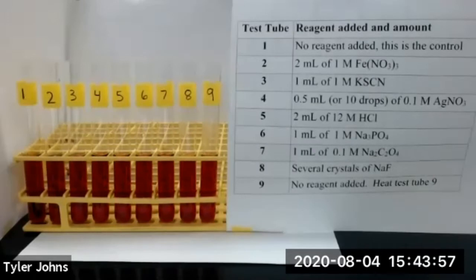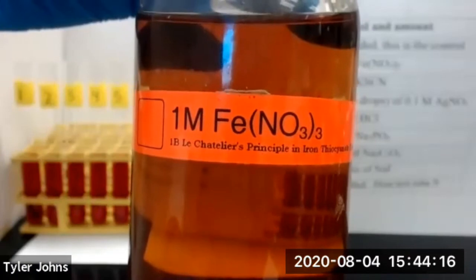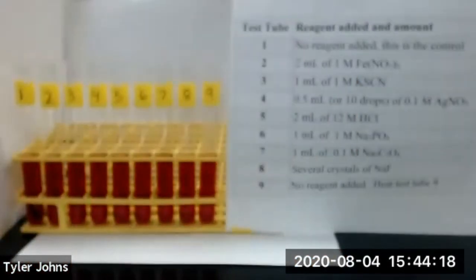The darkest test tube will have the highest concentration of Iron Thiocyanate Complex. We'll start by adding two milliliters of our one molar Iron 3 Nitrate to test tube number two.